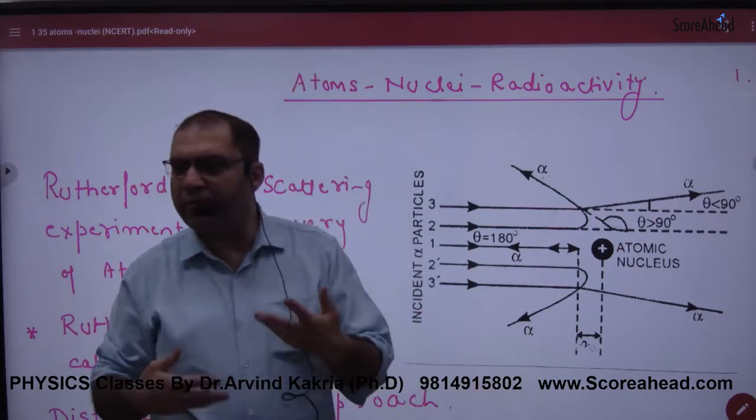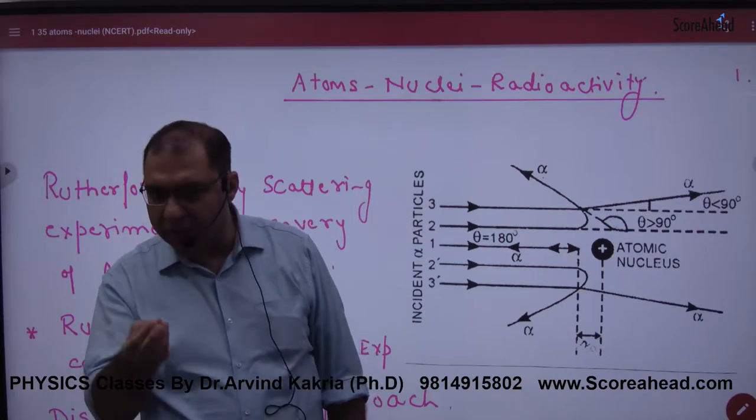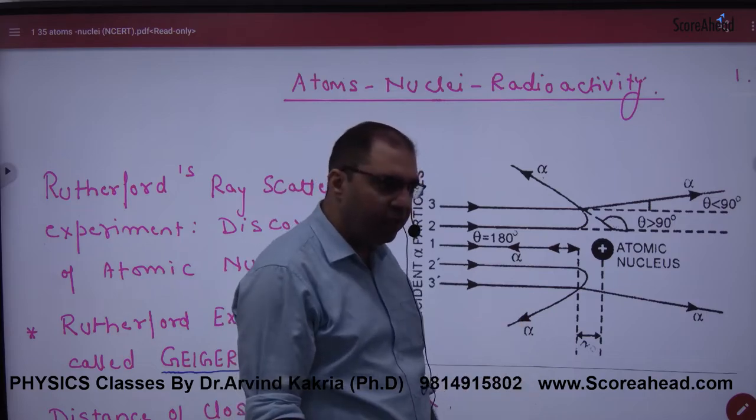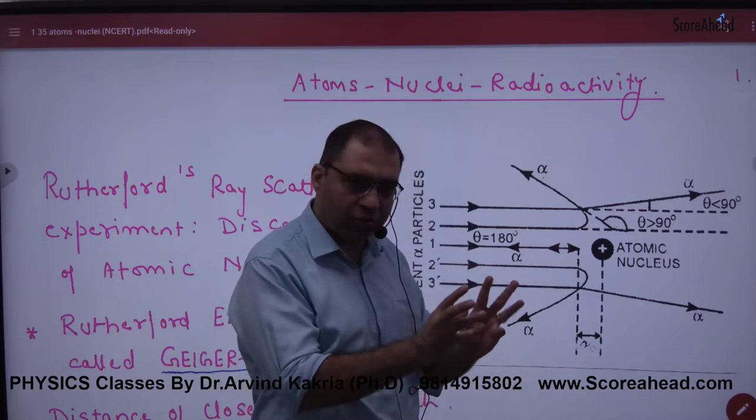So actually, many particles went straight away because the nucleus was very small, so they felt very small repulsion. And 180 degrees means that there is a strong thing inside, which is a nucleus.